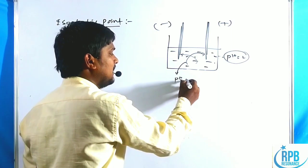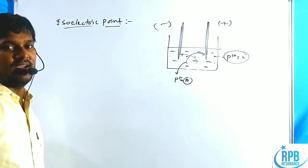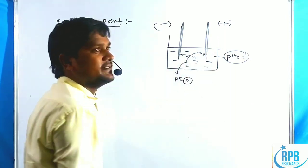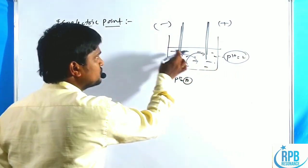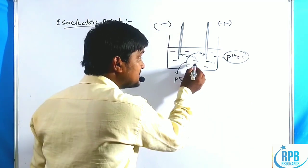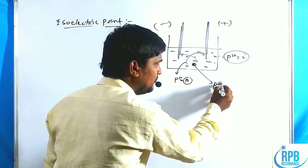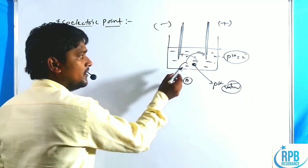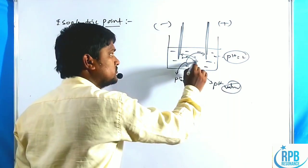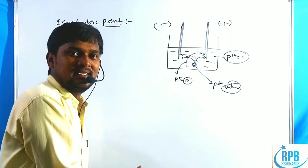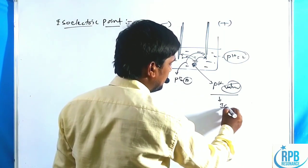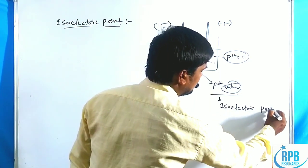At high pH values (greater than ~9–10), the amino acid moves toward the positively charged electrode. At lower pH it moves toward the negatively charged electrode. However, at a certain specific pH value, the amino acid solution neither moves toward the cathode nor the anode. That particular pH value is called the isoelectric point.